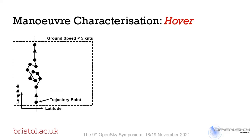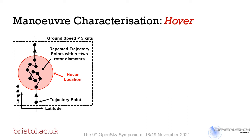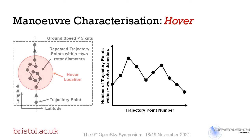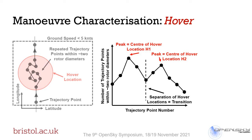Turning our attention to hover manoeuvres: we identified that below ground speeds of about 5 knots (2.5 m/s), we see clustering of trajectory points very close to one another, and we used these to identify hover manoeuvre locations. In flight training, a typical requirement is to keep the helicopter within two rotor diameters during hover, so we used this as a criterion to cluster trajectory points and form hover locations. We observed that sometimes a hover location would be followed by a short transition and then another hover location, so we looked at the number of trajectory points within two rotor diameters for each point — the peaks of this response representing the centre of each hover location.